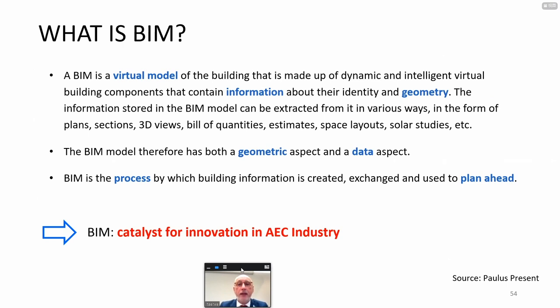BIM is a virtual model of the building made up of dynamic and intelligent virtual building components that contain information about their identity and geometry. The information stored in the BIM model can be extracted in various ways: plans, sections, 3D views, bill of quantities, estimates, space layout, solar studies, et cetera. So the BIM model has both a geometric aspect and a data aspect. BIM is the process by which building information is created, exchanged, and used to plan ahead. By many people, BIM is considered the catalyst for innovation in the AEC industry.